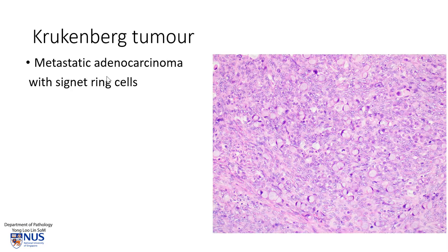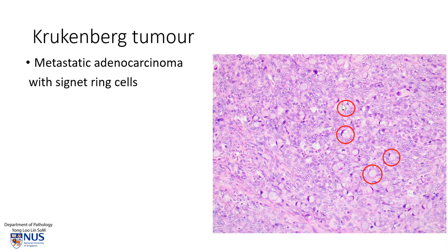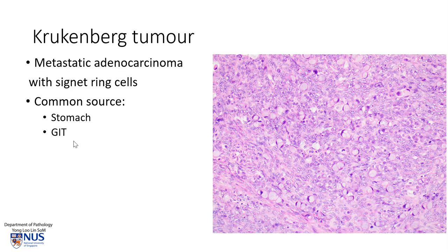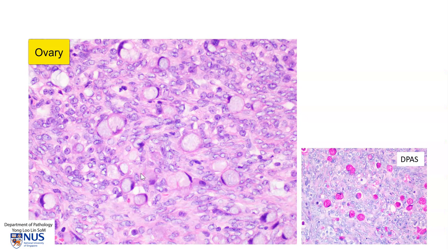Krukenberg tumor is defined as metastatic adenocarcinoma with signet ring cells. This is a microscopic picture showing the ovarian stroma — all these cellular areas are the stromal cells of the ovary. But we can make out that there are quite large cells occurring within the stroma, just infiltrating and percolating into it. These cells can be recognized as signet ring cells with very eccentric compressed nuclei and a bubbly, mucin-filled cytoplasm. The commonest sources are the gastrointestinal tract, in particular the stomach, when there is signet ring cell adenocarcinoma or poorly cohesive adenocarcinoma, and potentially primary sources in the pancreatobiliary tracts and the breast can also give rise to these tumors. Here is a higher magnification view of the signet ring cells, where you can appreciate the morphology of the cells.